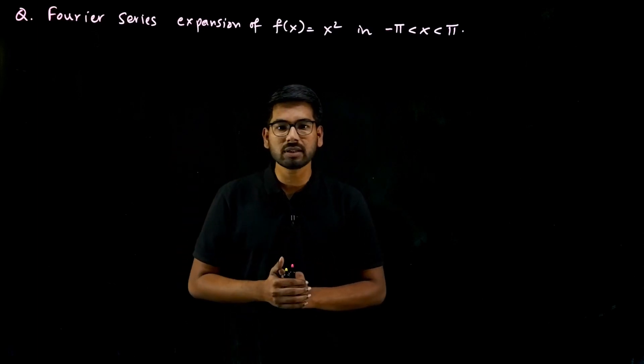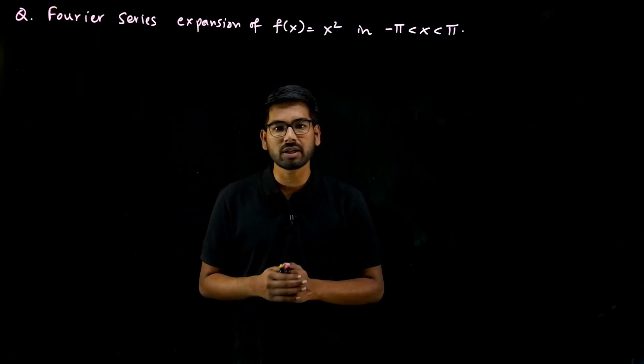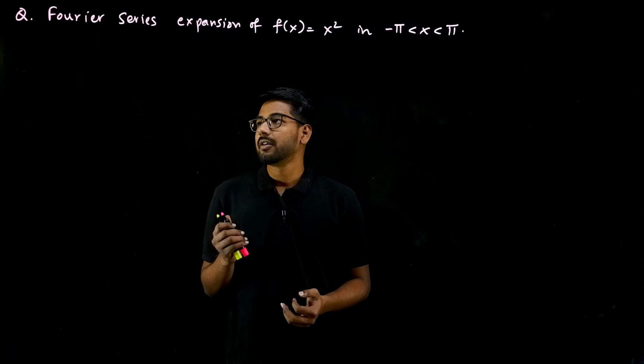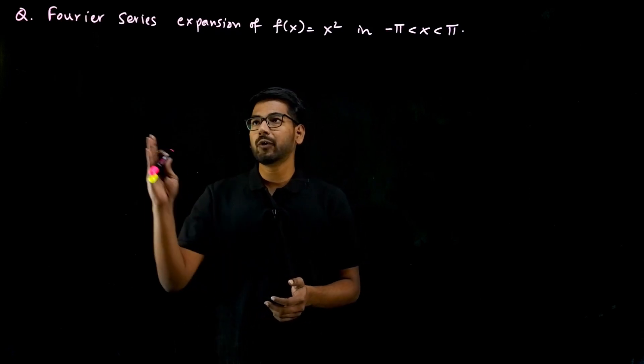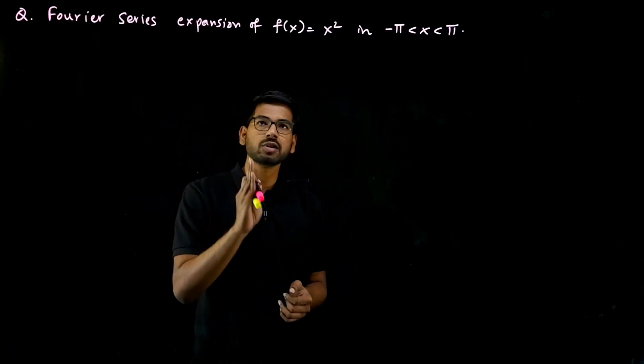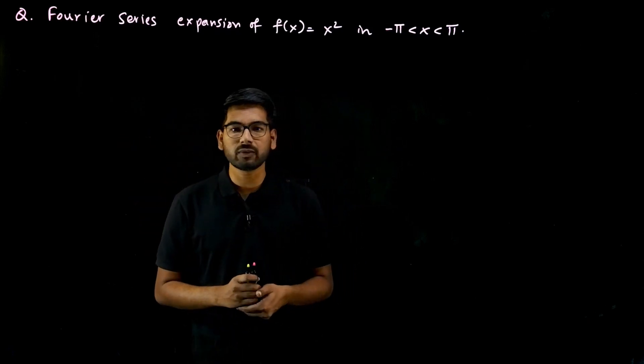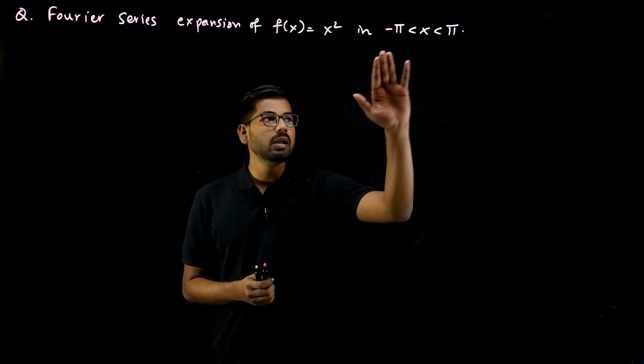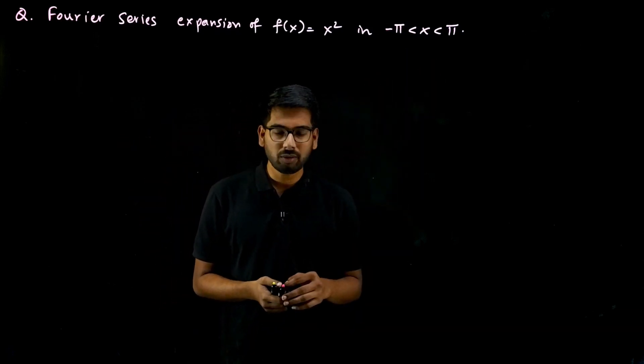So before going to solutions, please subscribe to our channel. The question is: find the Fourier series expansion of f of x equal to x squared in the interval minus pi to pi.